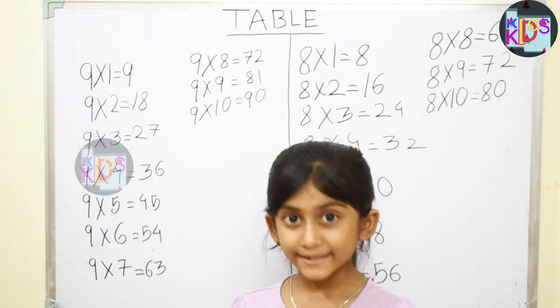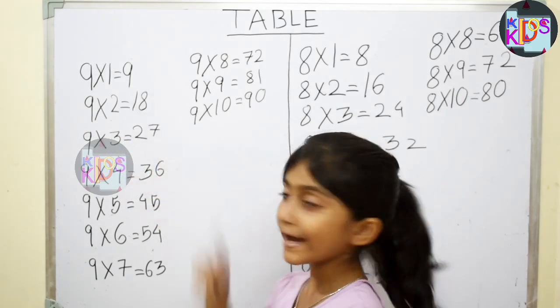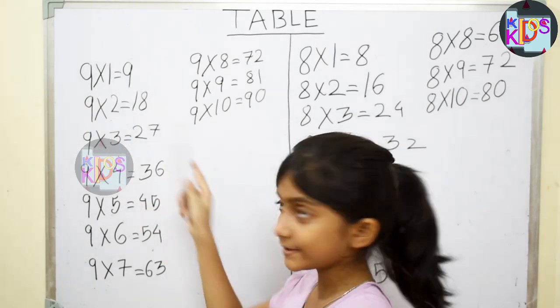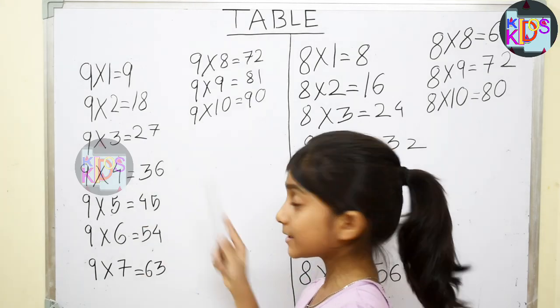Let's count with me. 9 times 1 is 9, 9 times 2 is 18, 9 times 3 is 27, 9 times 4 is 36, 9 times 5 is 45.